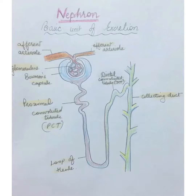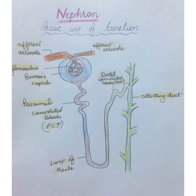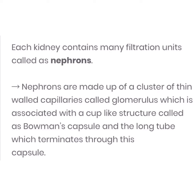Next comes the nephron. The kidney contains millions of nephrons, which is the basic unit of excretion. It is made up of Bowman's capsule, glomerulus, and a tubular system which connects to the collecting duct. Each kidney contains many filtration units called nephrons, made up of clusters of thin-walled capillaries known as the glomerulus, which is associated with a cup-like structure called the Bowman's capsule.